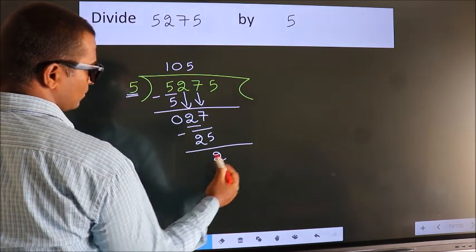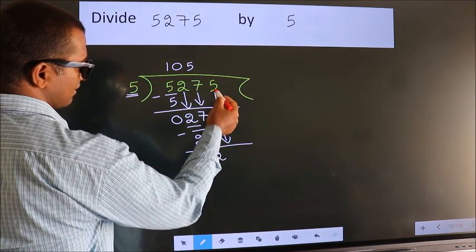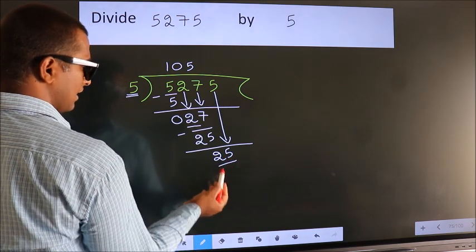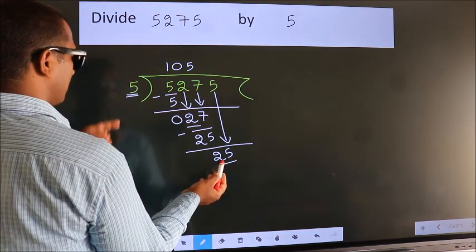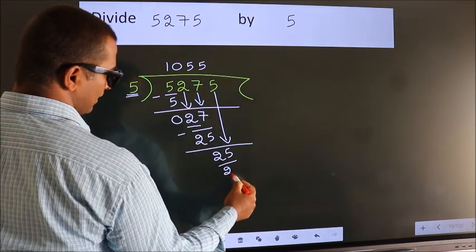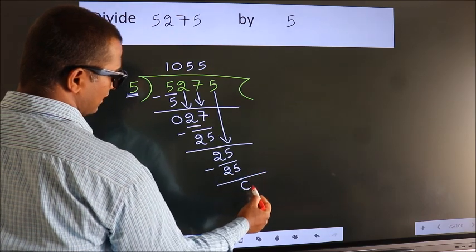We get 2. After this, bring down the beside number, so 5 comes down, giving us 25. When do we get 25? In the 5 table, 5 fives is 25. Now we subtract and get 0.